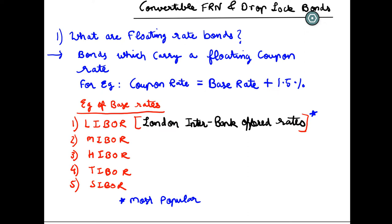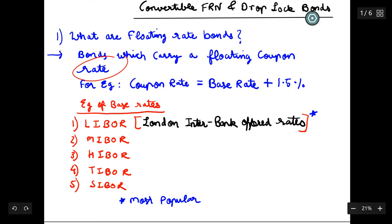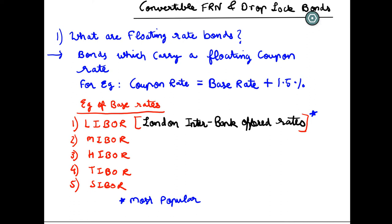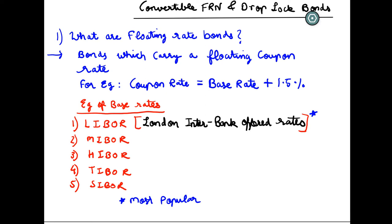Now if we have floating rate bonds — bonds which carry a floating coupon rate — the coupon rate is decided as base rate plus 1.5%. As the base rate changes, the coupon payment also changes. From the investor's point of view the receipt changes, and from the company's point of view the payment changes. Base rate examples include LIBOR, MIBOR, HIBOR, TIBOR, and SIBOR.